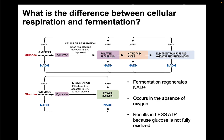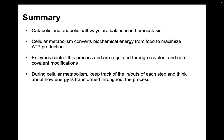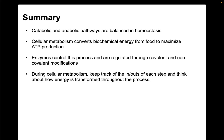To summarize: catabolic and anabolic pathways are connected and balanced in homeostasis. Cellular metabolism is the process by which we convert biochemical energy from food to maximize ATP production, and when talking about glucose metabolism, that's cellular respiration. Enzymes control this process and are regulated through covalent and non-covalent modifications. During cellular metabolism, keep track of the ins and outs and think about how energy is being transformed throughout the process.